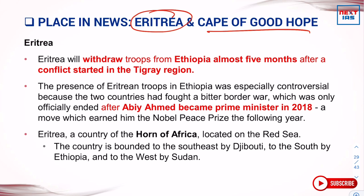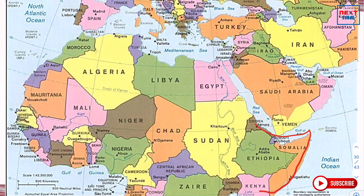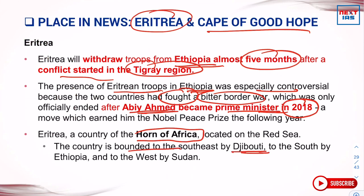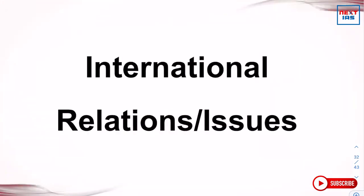Eritrea was in the news because it decided to withdraw troops from Ethiopia's Tigray region. The presence of Eritrean troops was controversial given the two countries' bitter border war, which was officially ended when Abiy Ahmed became Prime Minister in 2018. Eritrea is a country in the Horn of Africa, bounded to the southeast by Djibouti, to the south by Ethiopia, and to the west by Sudan. This area is always a hotspot for international relations.